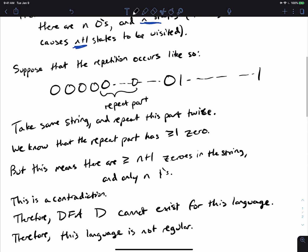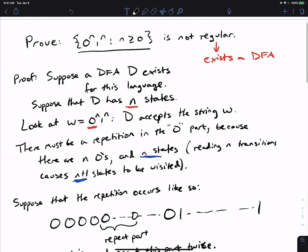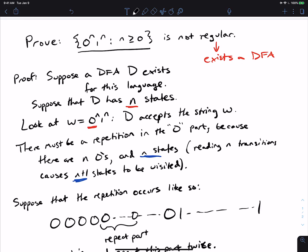So, this was a direct proof that the language 0 to the n, 1 to the n is not regular.